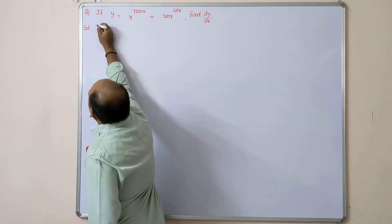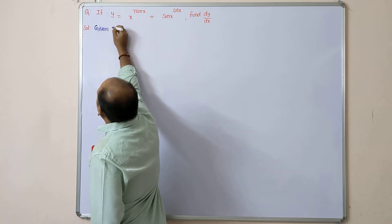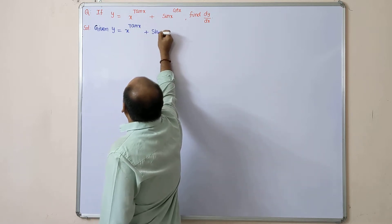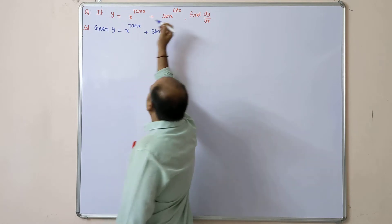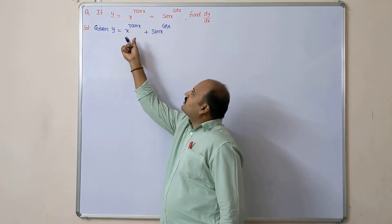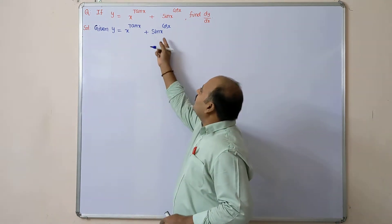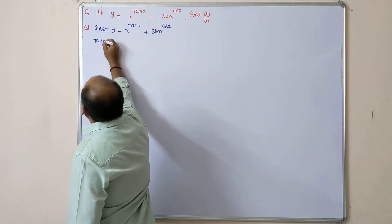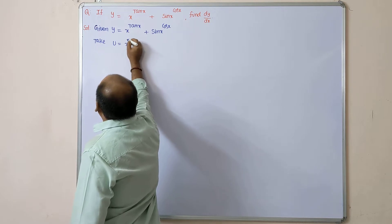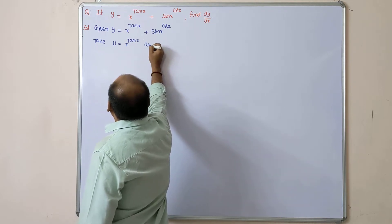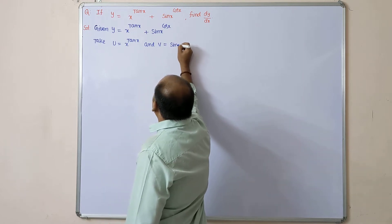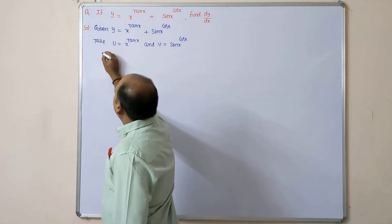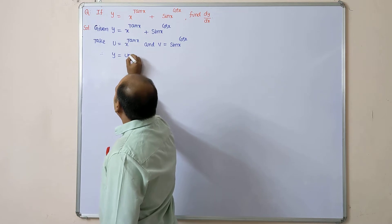The given value is y = x^(tan x) + sin(x)^(cos x). I am assuming that x^(tan x) is equal to u, and sin(x)^(cos x) is equal to v. So take u = x^(tan x) and v = sin(x)^(cos x). Therefore the value of y becomes y = u + v.